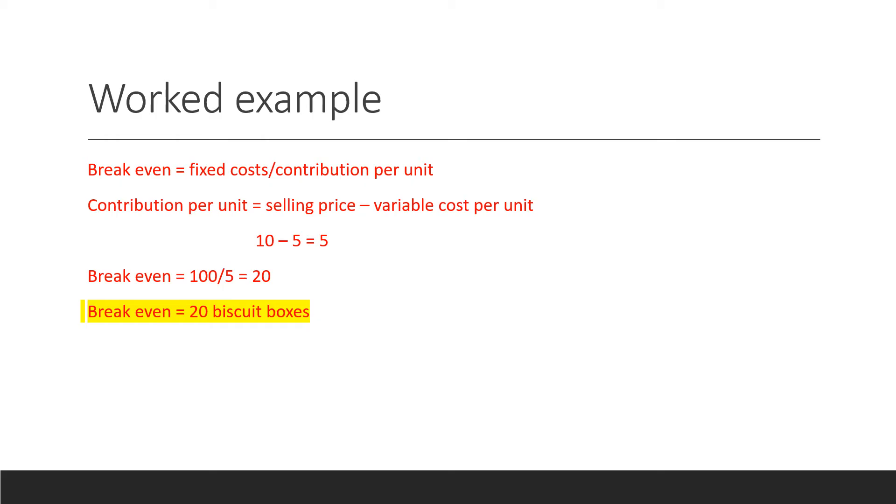So then we do break even, which is the fixed cost, which is £100, divided by the contribution per unit, which is £5. And that will give us £20. So her break even. To break even, Amy needs to make 20 biscuit boxes.